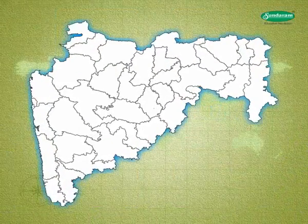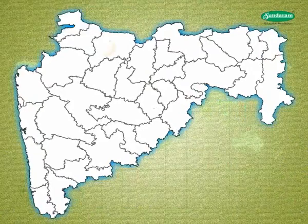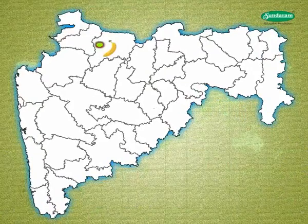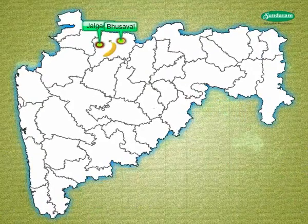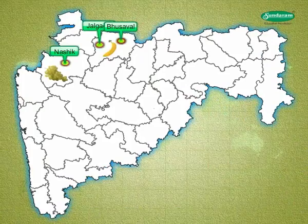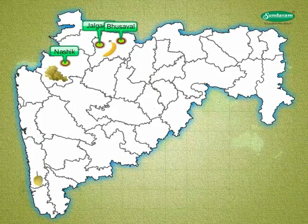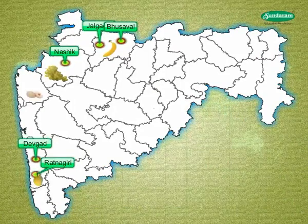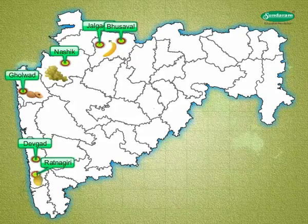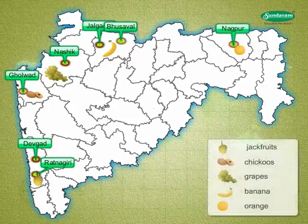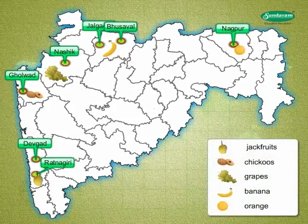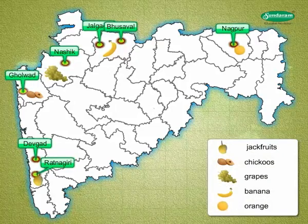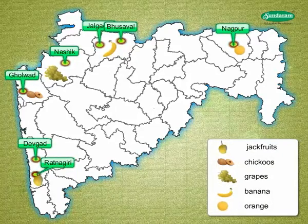There are specialized areas for particular fruits: bananas in Jalgaon-Bhusawal, grapes of Nashik, Alphonso mangoes of Ratnagiri and Devgad, chikus from Gholwar, and oranges from Nagpur. Now let us get a brief insight into the main crops of Maharashtra.